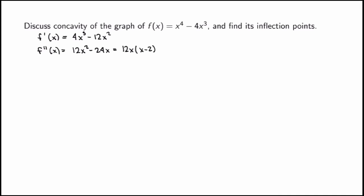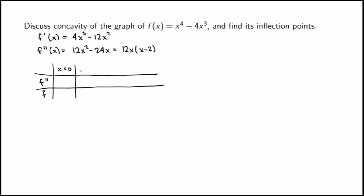To study concavity I construct a table for f double prime. There are two zeros — x = 0 and x = 2 — giving three regions: x less than 0, then x = 0 where f double prime is zero, then x between 0 and 2, then x = 2 where f double prime is zero, then x greater than 2.